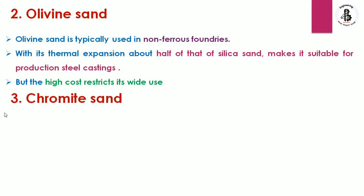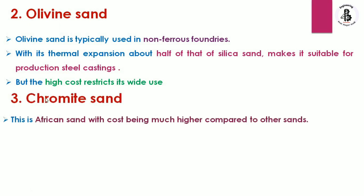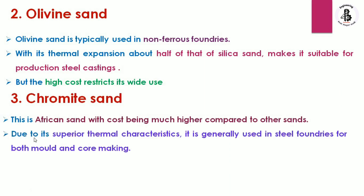Chromite sand is known as African sand, and its cost is much higher compared to all other sands. Due to its superior thermal characteristics, it is generally used in steel foundries for both mold making as well as core making. Cores are used for making hollow castings in the foundry process.